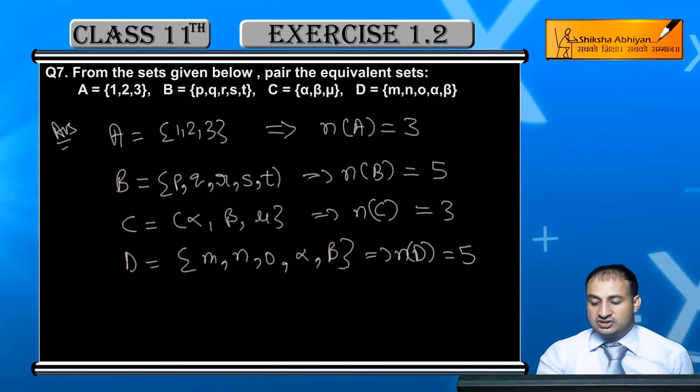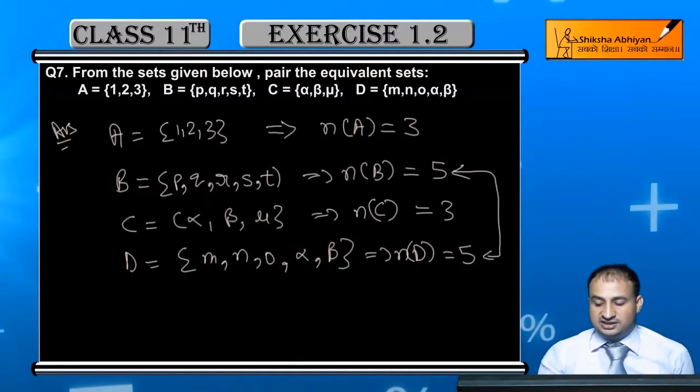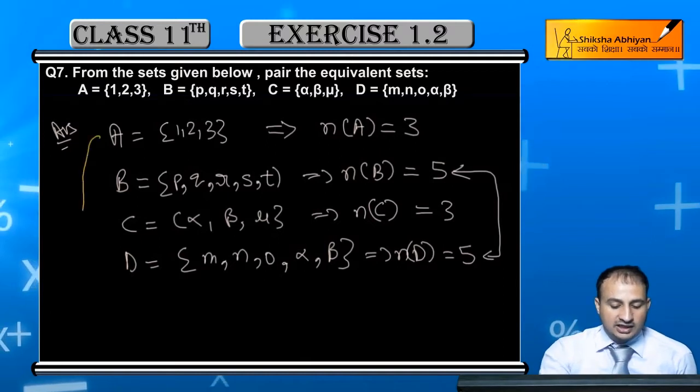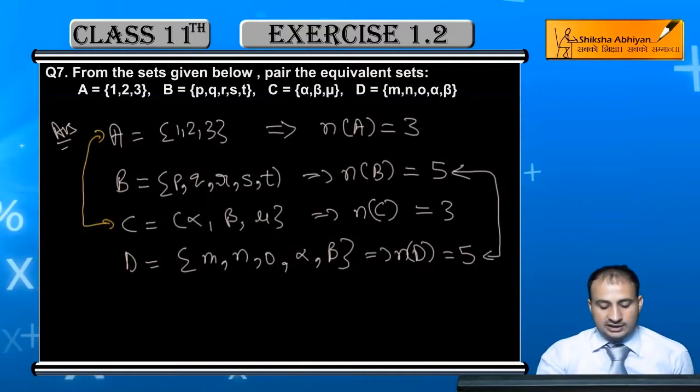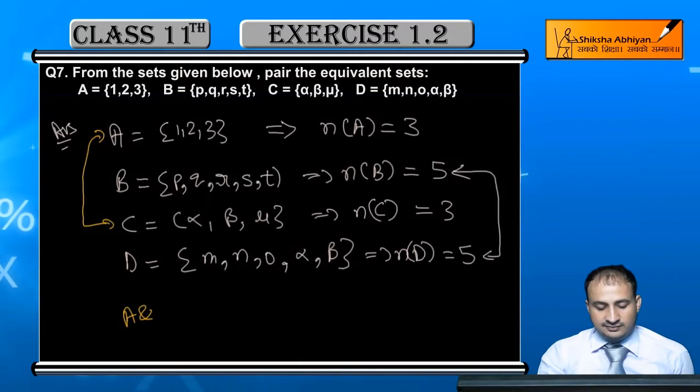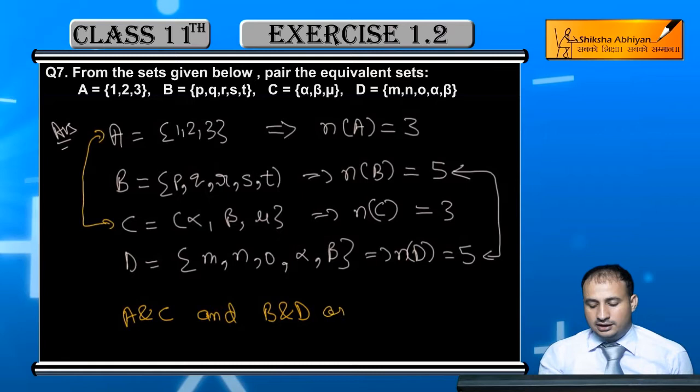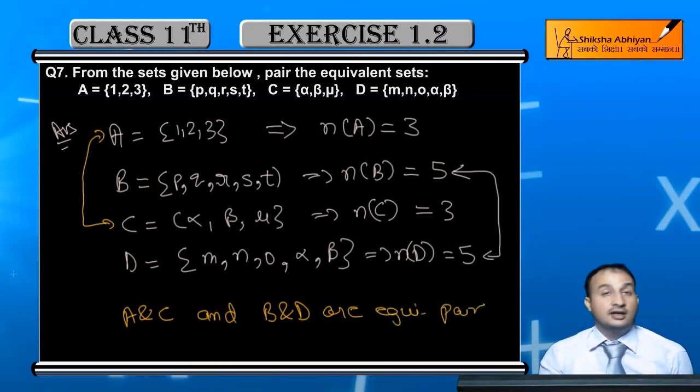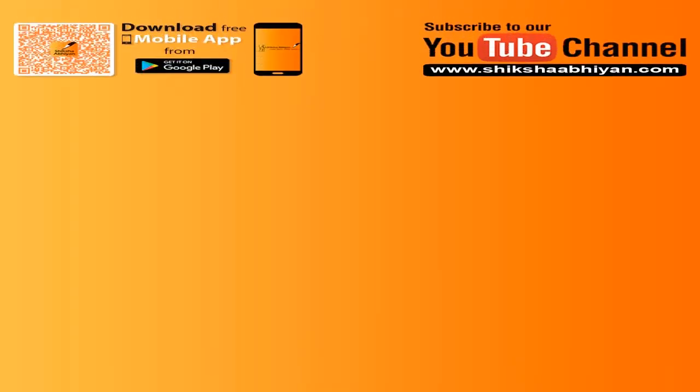Again 5. So it's clear here that B and D are equivalent. And after that, A and C are equivalent. So you can write A and C and B and D are equivalent pairs. Equivalent pairs.